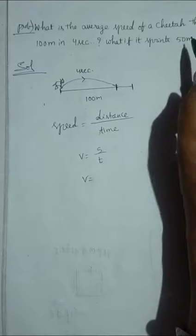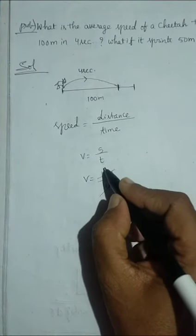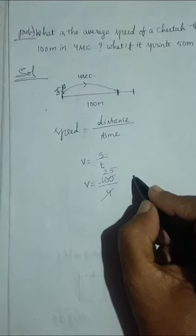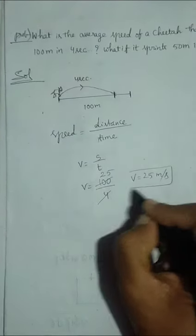So v is equal to what? The distance given here is 100 meters, time is 4 seconds. So speed is equal to 25 meters per second.